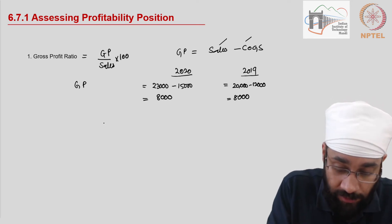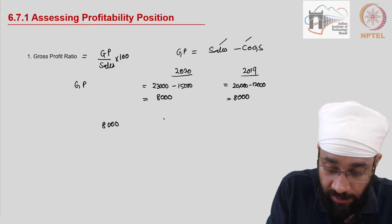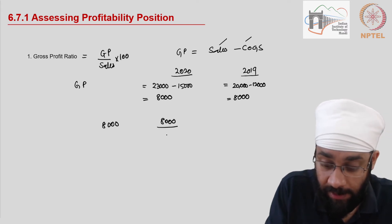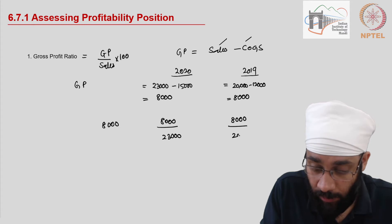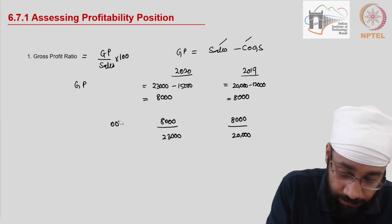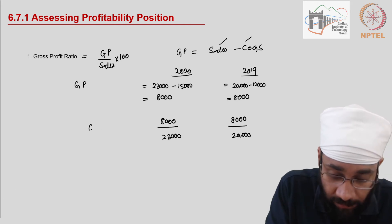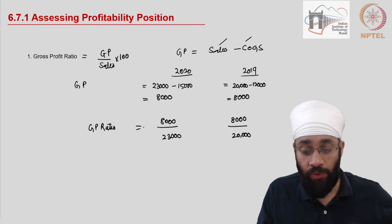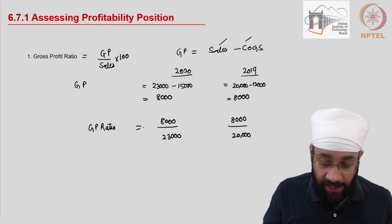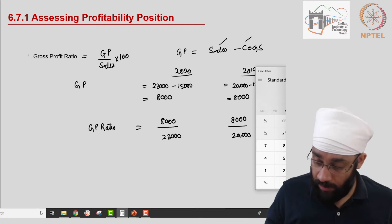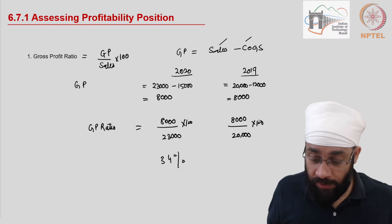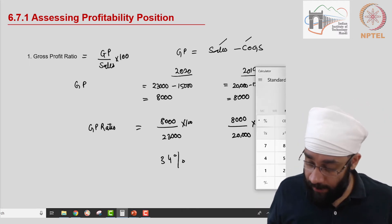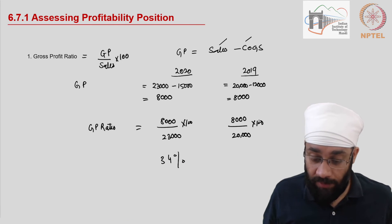Now we divide gross profit by sales. For 2020: 8,000 divided by 23,000. For 2019: 8,000 divided by 20,000. Calculating these: 8,000 / 23,000 = 34%, and 8,000 / 20,000 = 40%.